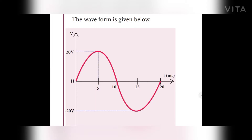The graph is drawn between voltage and time, with voltage on the Y-axis and time on the X-axis. The time axis is marked in milliseconds: 0, 5, 10, 15, 20. The time period for one full cycle is 20 milliseconds. The peak value of 20 volts occurs at 5 milliseconds in the positive direction, and the negative peak at 15 milliseconds.